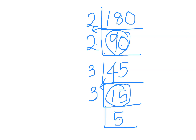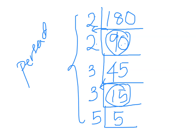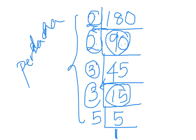And last one — lima bahagi lima. Perasan tak? The numbers I chose are all nombor perdana. So sekarang 180, you kena divide dengan nombor di luar, dan akhir sekali dapat satu. You akan dapat jawapan satu. So from here, you boleh ambil dari luar — 2 times 2, times 3, times 3, times 5.